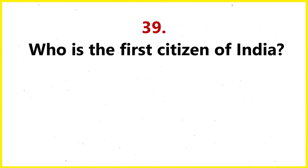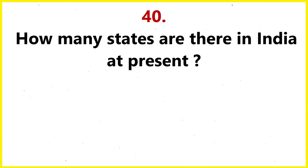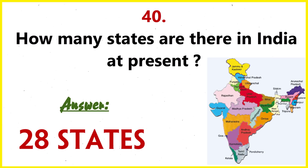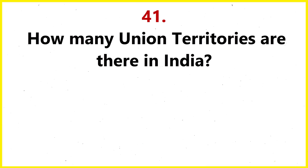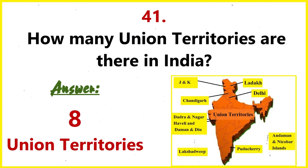Who is the first citizen of India? The president of India. How many states are there in India at present? Twenty-eight states. How many union territories are there in India? Eight union territories.